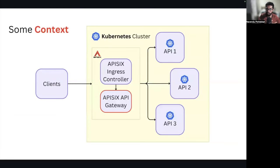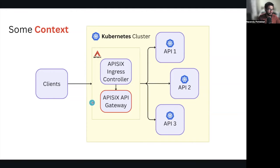Let's set some context before we get into the nitty-gritties of the Gateway API v1.0. Most probably, if you clicked on this video, you are already familiar with the Gateway API or at least familiar with the Kubernetes Ingress API. The Kubernetes Ingress API and the Kubernetes Gateway API are two Kubernetes APIs used to configure how traffic is routed into your clusters.